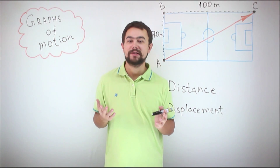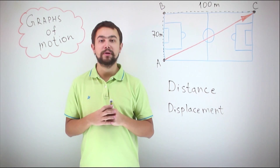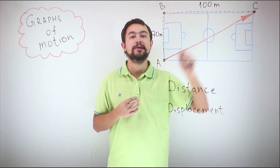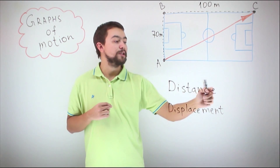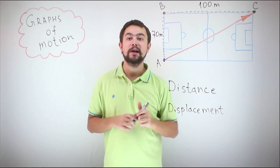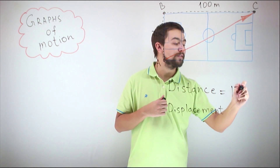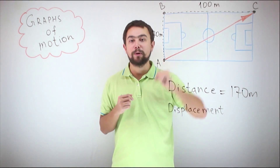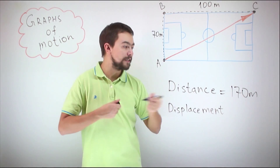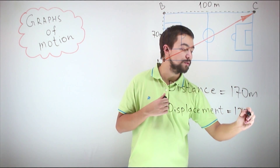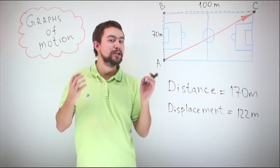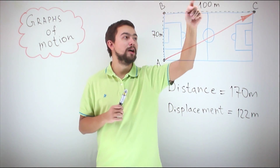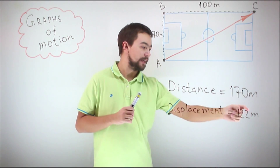We will need quantities such as distance and displacement. Imagine you walk from point A to point B and from point B to point C around a football field. The distance traveled is equal to 70 plus 100, which equals 170 meters. Displacement, on the other hand, is the vector connecting your starting point and your finish point, and its length is equal to 122 meters — found using the Pythagorean theorem: the square root of 70 squared plus 100 squared equals 122.